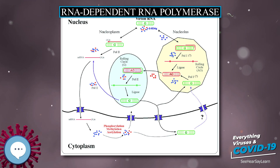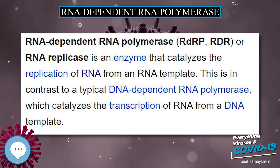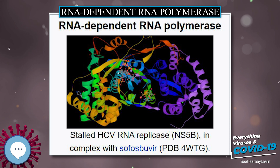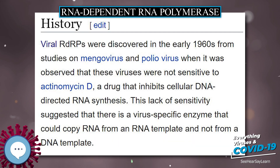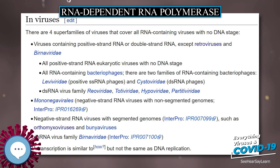Bunyaviral RDRP monomer (PDB: 5AMQ) resembles the heterotrimeric complex of orthomyxoviral influenza (PDB: 4WSB) RDRP. Since it is a protein universal to RNA-containing viruses, RDRP is a useful marker for understanding their evolution. The overall structural evolution of viral RDRPs has been reviewed.